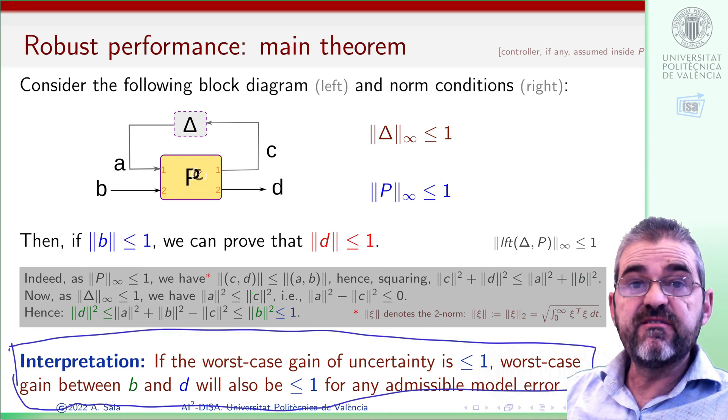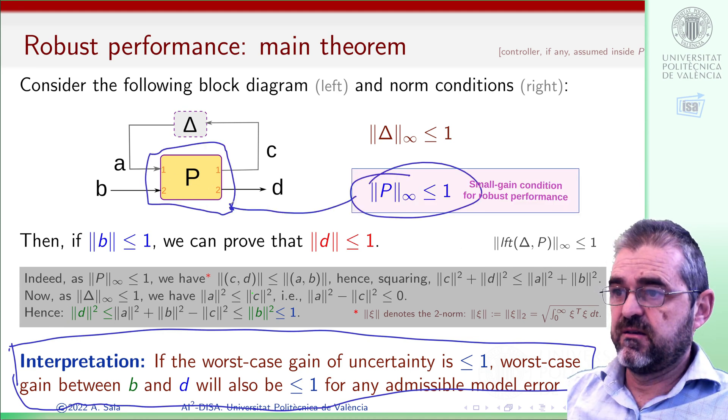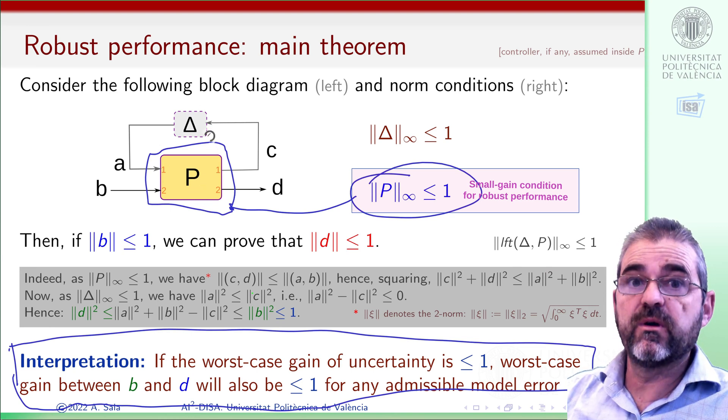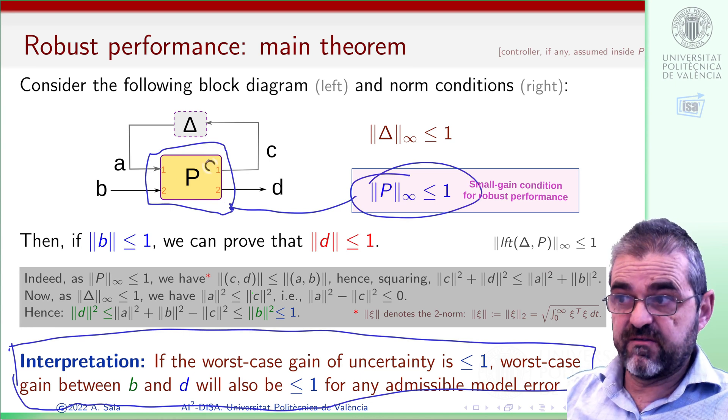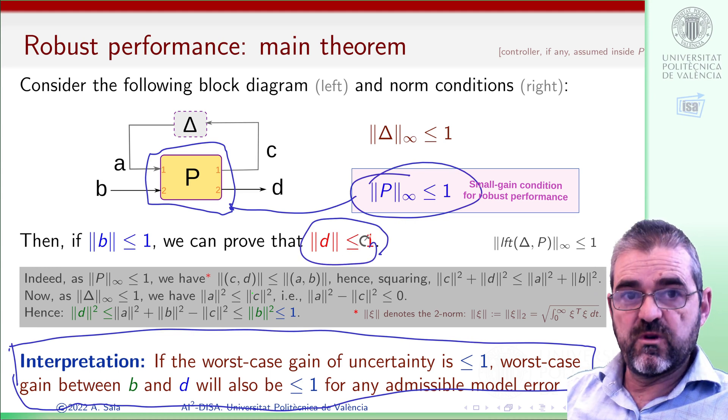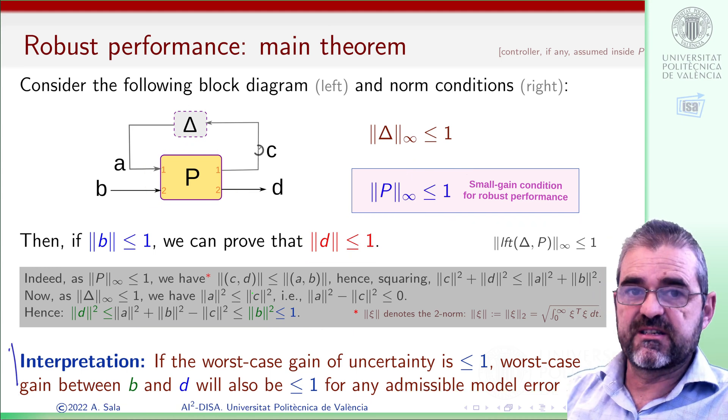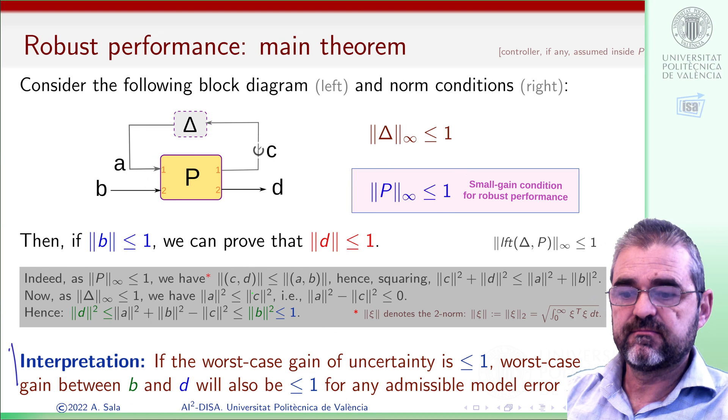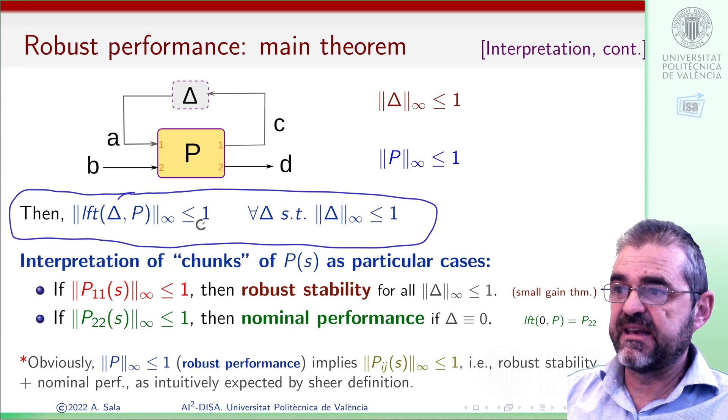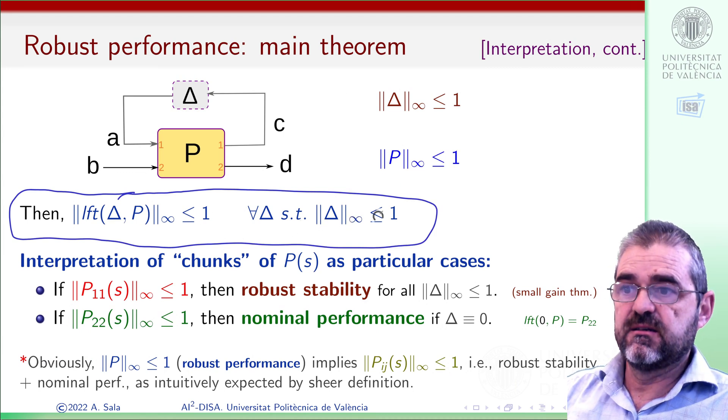In summary, if, given our scalings of uncertainty and performance measures, we check that the infinity norm of P, which is the only thing we can check because delta is unknown, if we can prove that the infinity norm of P, worst-case gain, is less than 1, then the size of D will be less than 1 for all admissible uncertainties. So this is the robust performance result. The worst-case gain of the LFT interconnection will be less than 1 for all delta such that its worst-case gain is less than 1.